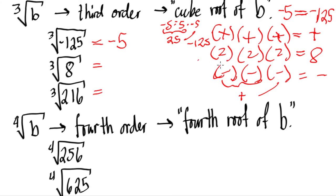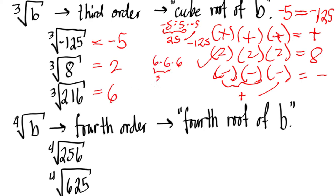For the cube root of 8, the answer is strictly positive 2, because negative 2 cubed would give negative 8, not 8. For the cube root of 216, the answer is 6. We can verify: 6 times 6 is 36, and 36 times 6 gives us 216. That's correct.